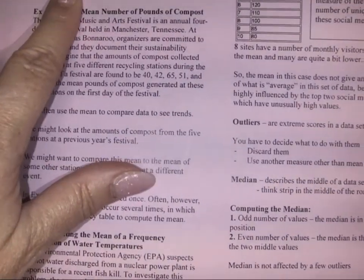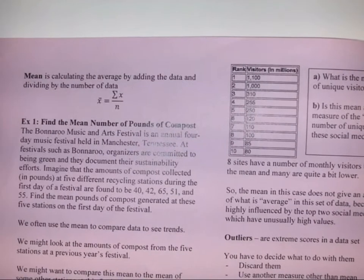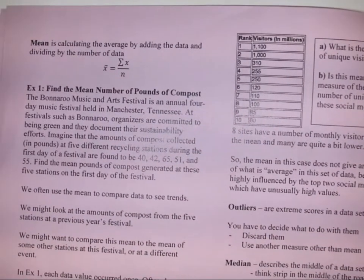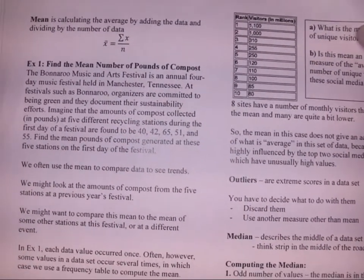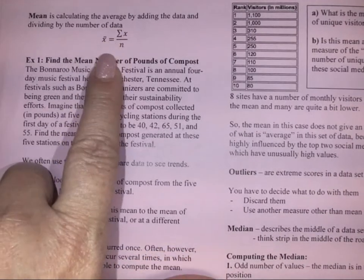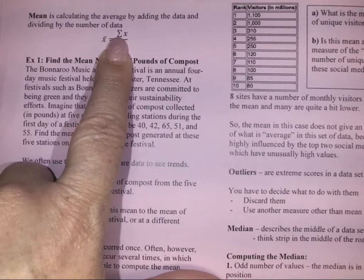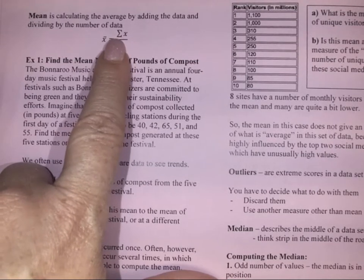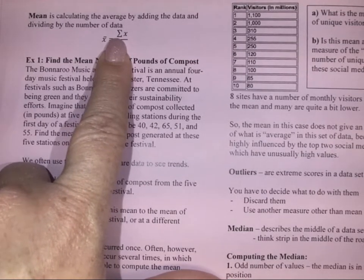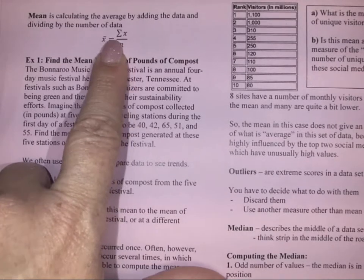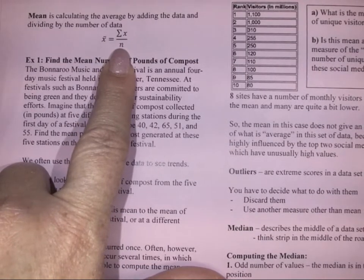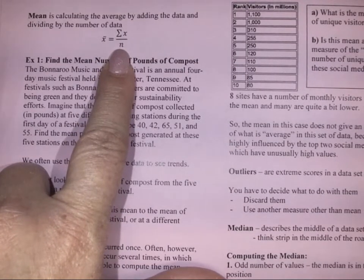The mean is calculating the average by adding the data and dividing by the number of data. Here's our formula: x bar equals the summation of x. That symbol means summation, and it means you're going to add up all the data, and then we're going to divide by n, which is the number of data values we have.